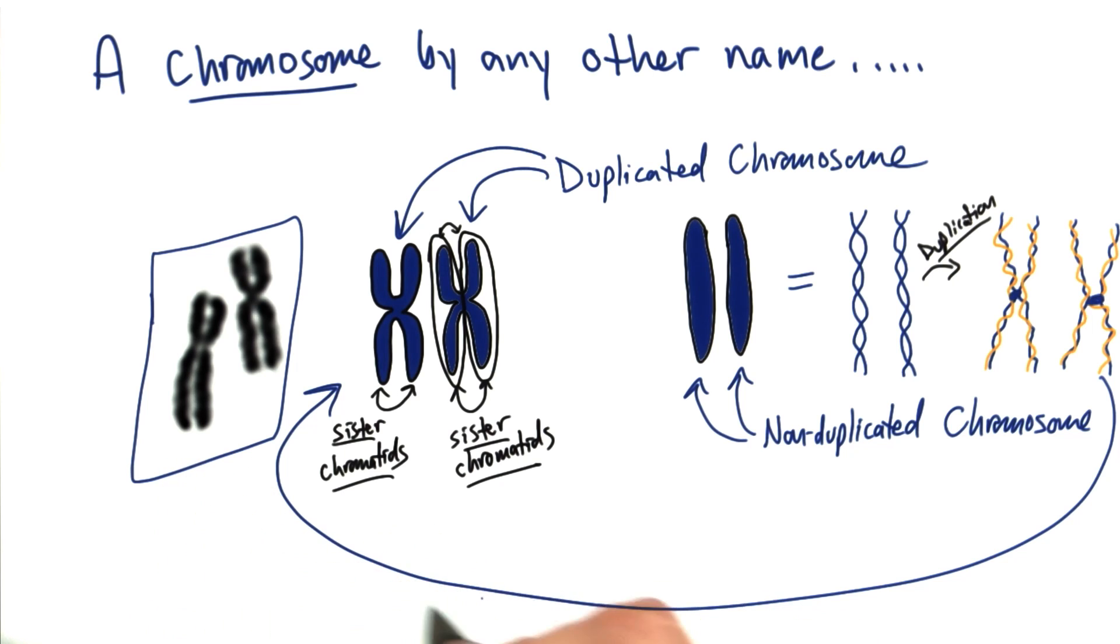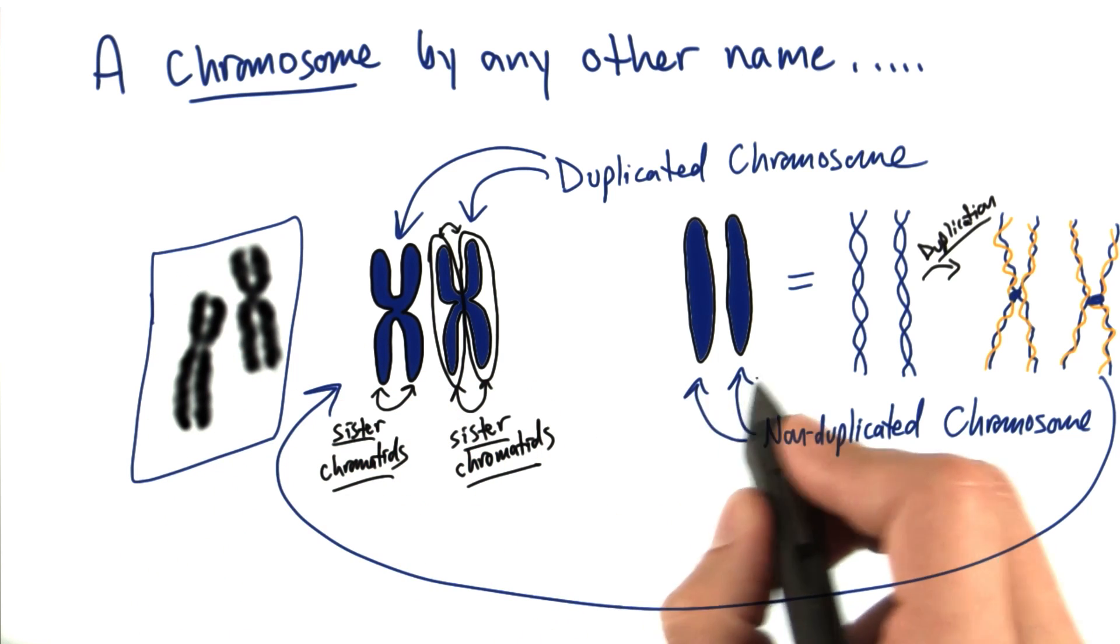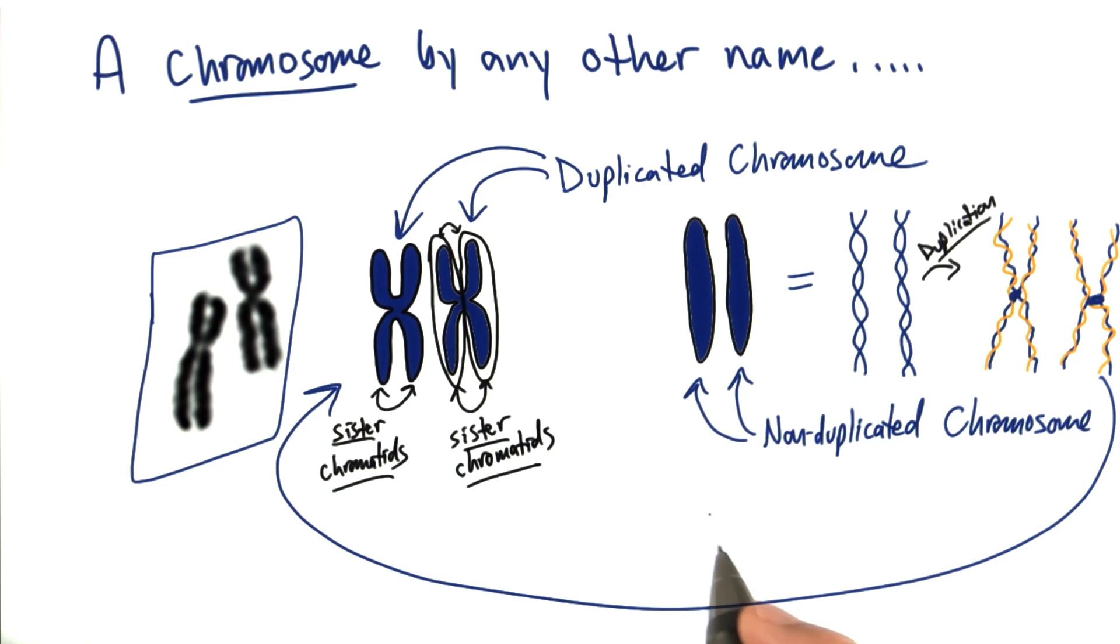And because we're at this stage after the DNA's been duplicated, they look like this X structure. But they can also look like this non-X or just linear structure.